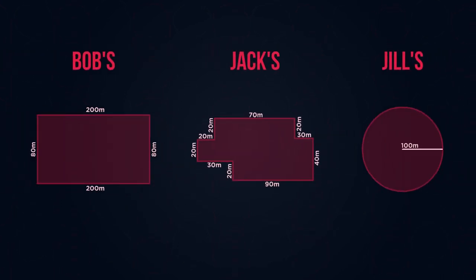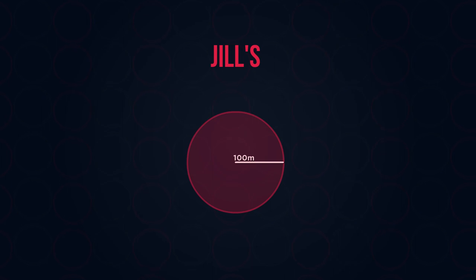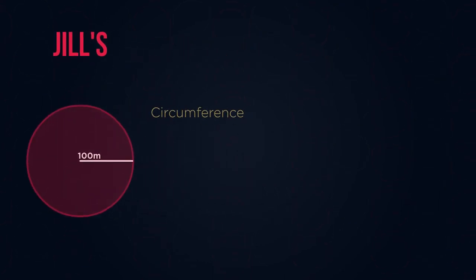The final field fence we need to work out is for Jill. Jill's farm is different — for the perimeter, we still need to measure the length around it, but circles only have one side. Do you remember that the perimeter of a circle is known as the circumference? The equation we use is 2 pi radius, or pi diameter, whichever you prefer.